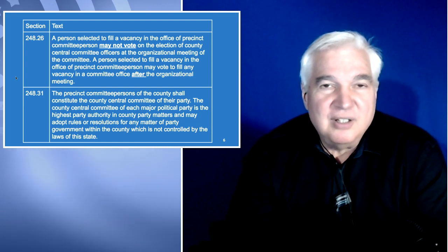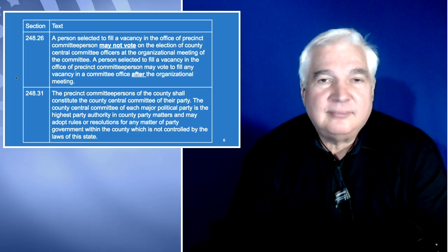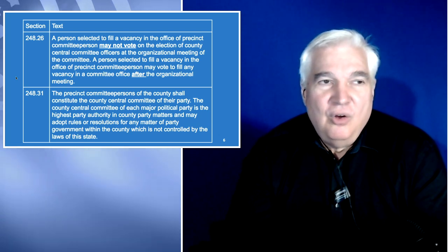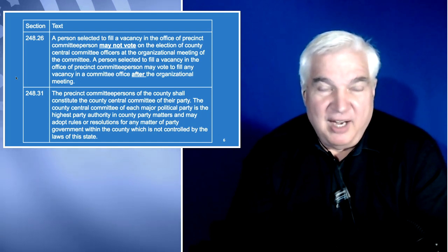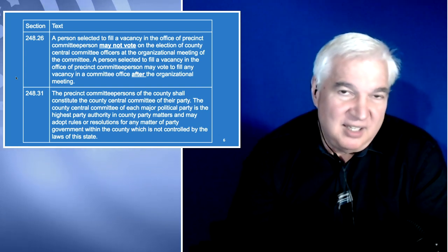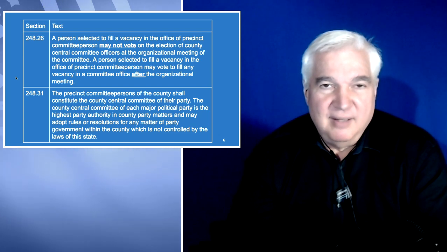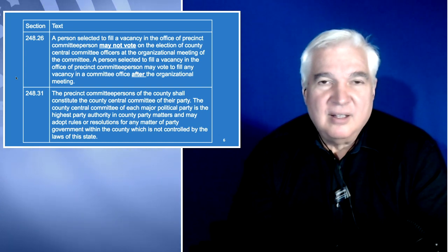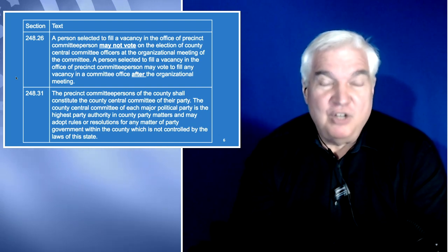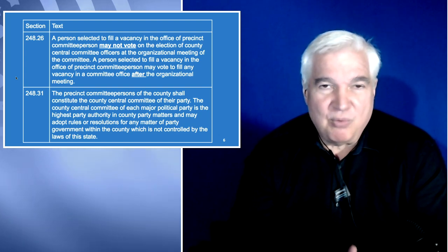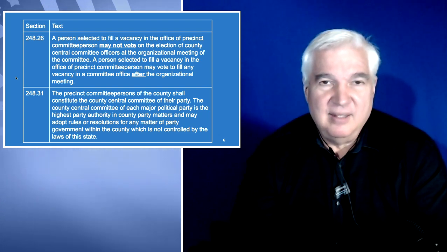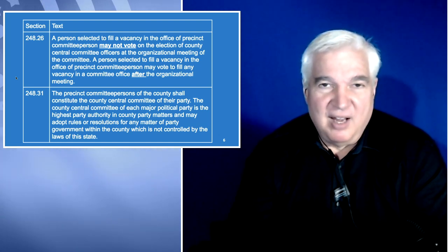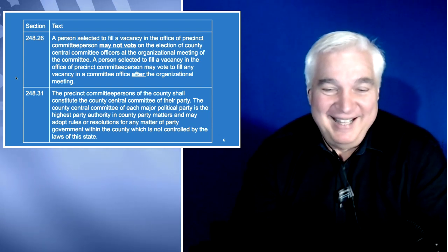There's only one point where you can be elected and that's in the primary of the even-numbered year. If you were not elected last May, the only other way to become a PCP is to be appointed. You are still an appointed PCP and you have all the rights of a precinct committee person except this one specific right, which is to vote in the reorganization meeting. This makes it complicated when you have a lot of appointed people — you have to make it clear so everyone doesn't get upset when you tell them they don't get to vote.